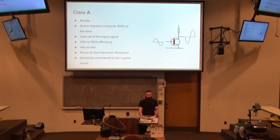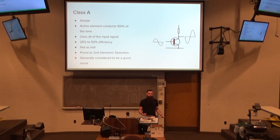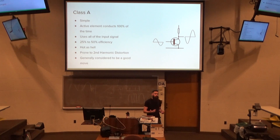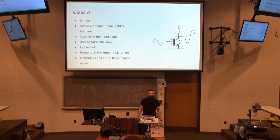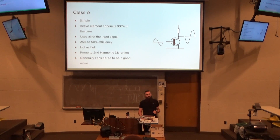In Class B you turn it off. Another thing with Class A is it gets really hot because of all that wasted energy. The transistor gets hotter, and then you have problems with linearity. So you need a really high-quality transistor, which gets into the whole cycle of it being expensive.